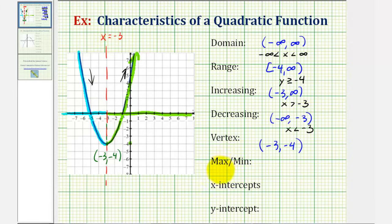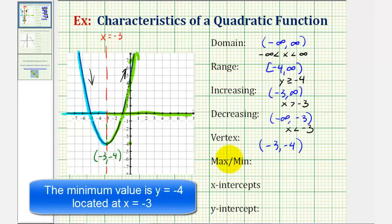Next, we're asked to find the maximum or minimum function value. Because this parabola opens up, we are going to have a minimum value, which would occur at this low point. The minimum value is actually the y coordinate of the vertex. So the minimum value is y equals negative four.